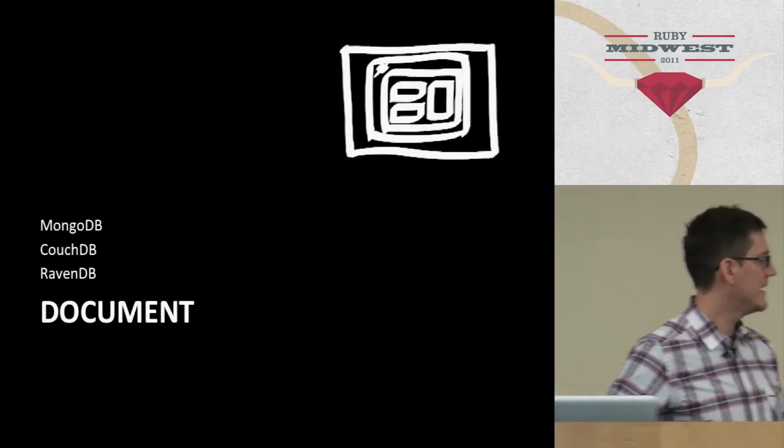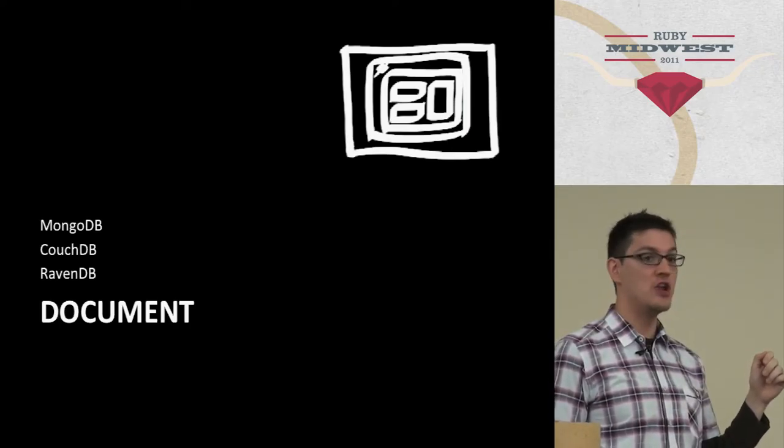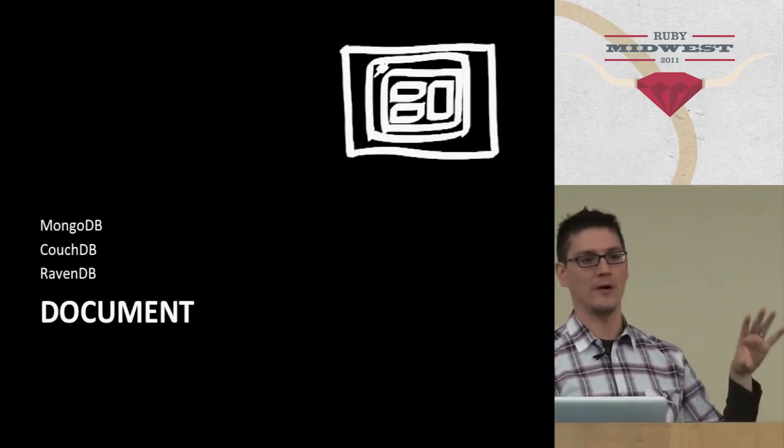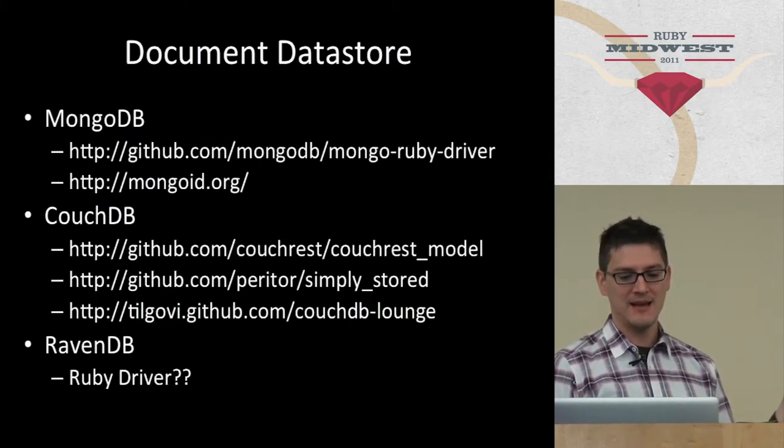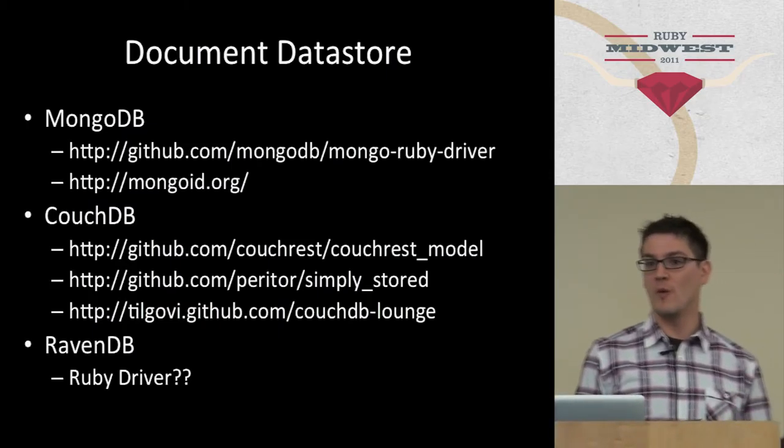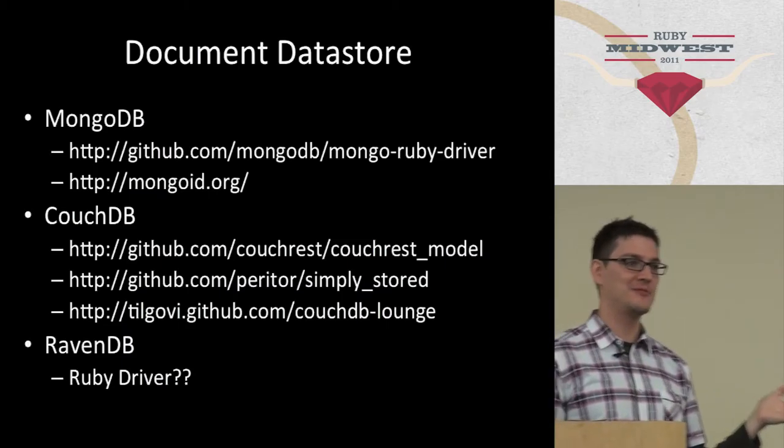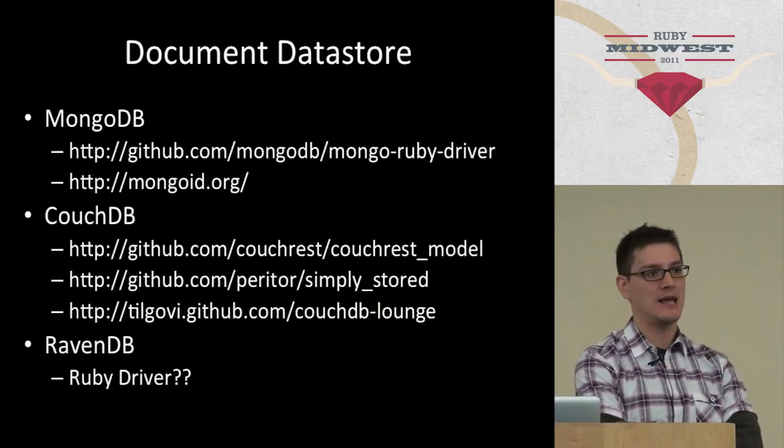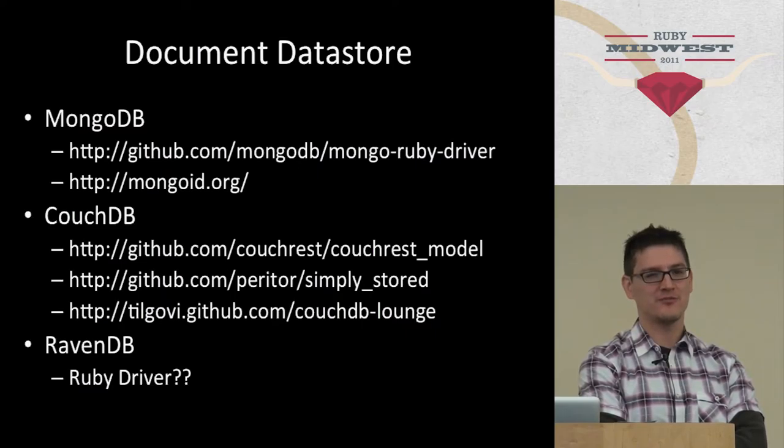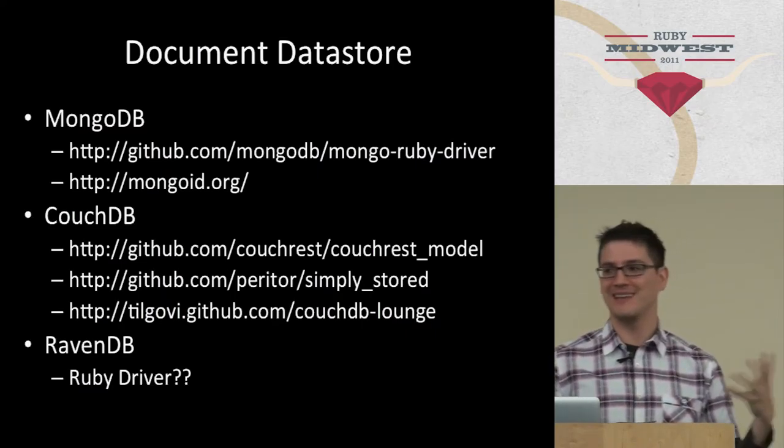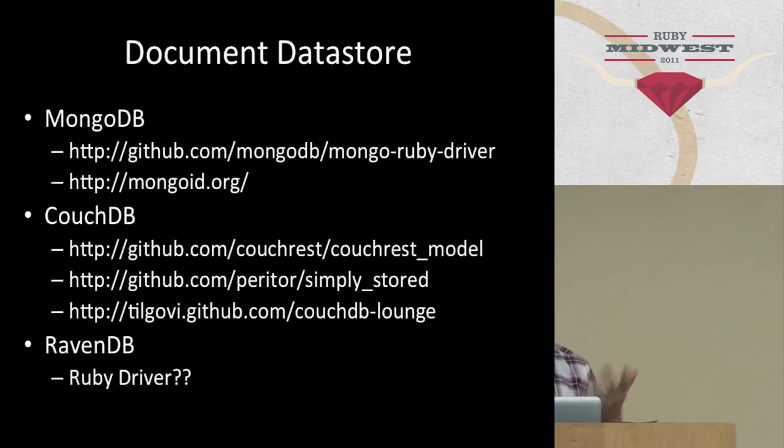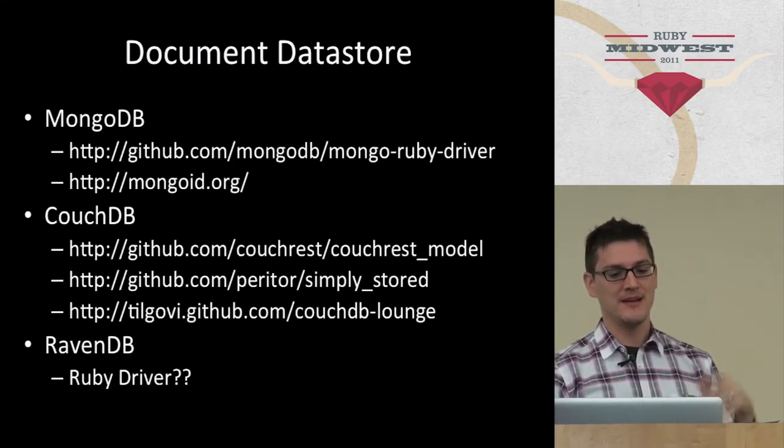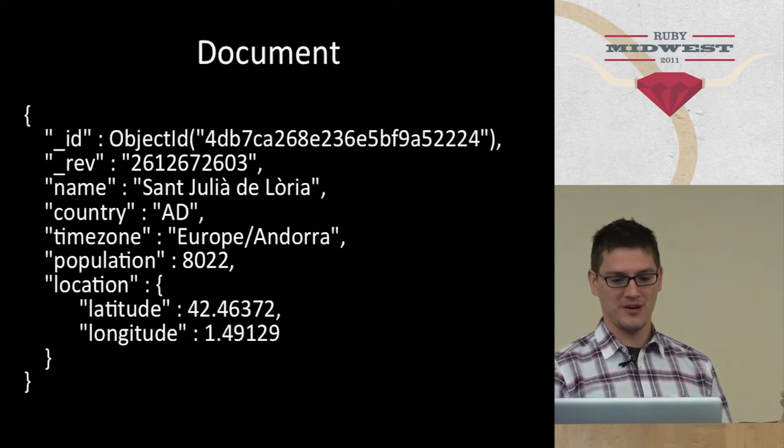Document datastores. If any of you have ever used a NoSQL database, it's probably going to be a document datastore. It's probably been MongoDB or CouchDB. There's another one called RavenDB. If any of you are aware of a Ruby driver for RavenDB, that would be fantastic because I could not find one. RavenDB is written in .NET, so I think that's part of the reason it hasn't gotten very popular in this community.